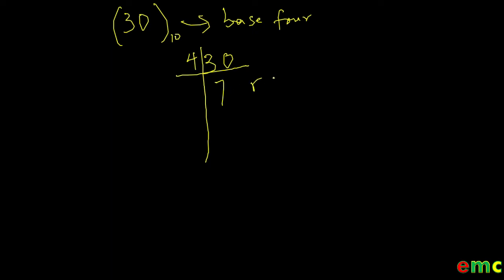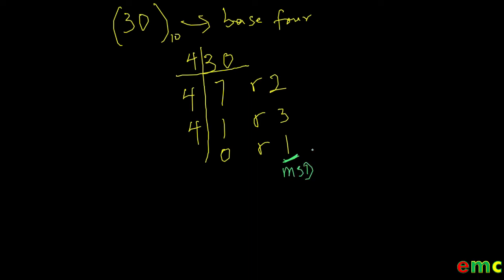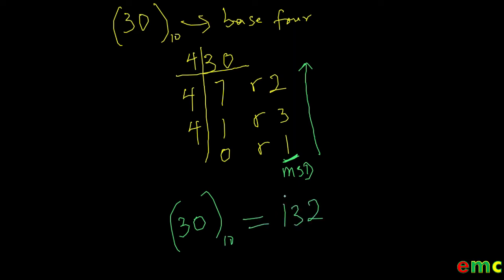So we continuously divide 30 by 4: 30 divided by 4 gives 7 remainder 2; 7 divided by 4 gives 1 remainder 3. Then 1 divided by 4 is not possible, so we replace our 1 with 0 and bring it down. Since the last digit is our most significant digit, we write our new value from the bottom up. Therefore, 30 in base 10 is equal to 132 in base 4.